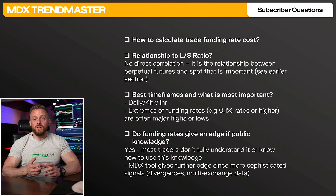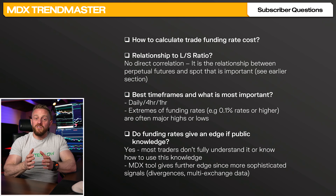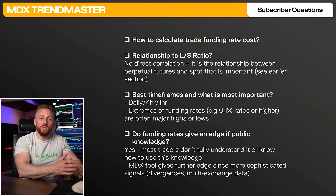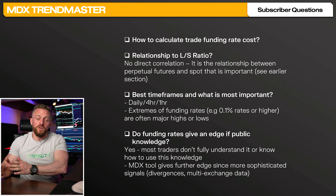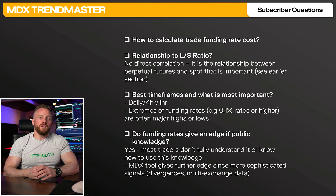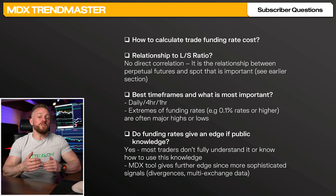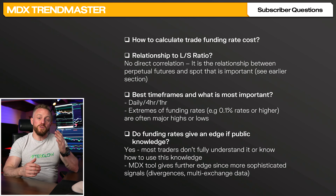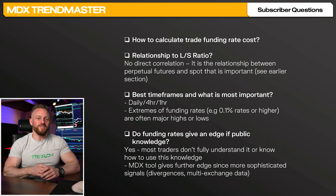There's not a one-to-one direct correlation between the funding rate and the long/short ratio, although if the market is heavily swung towards a lot of longs or big long positions — or shorts on the other side — that's obviously going to affect the perpetual futures versus the spot price. Check out the earlier section on that and let me know if you still don't understand in the comments.